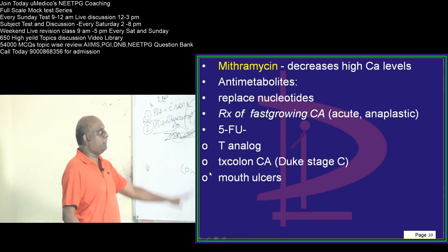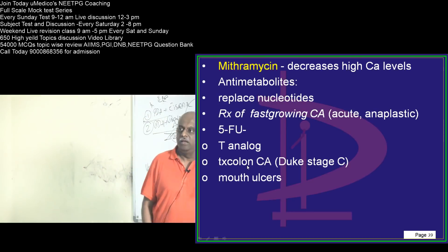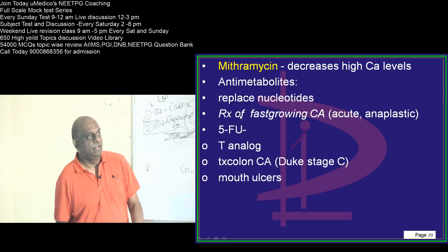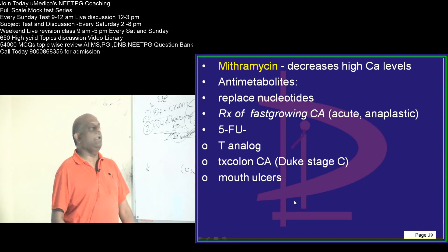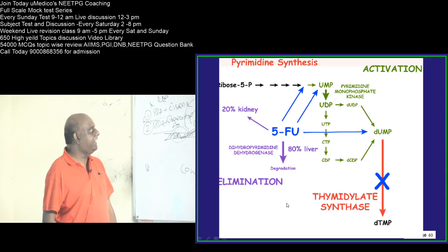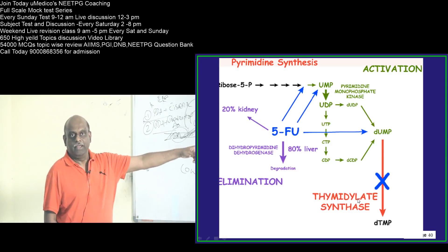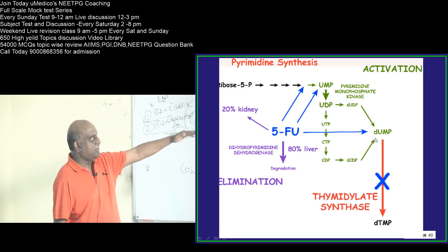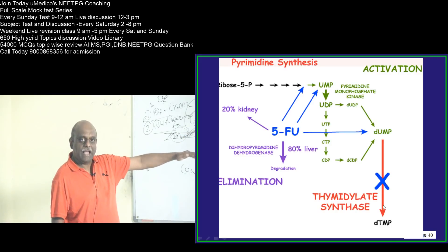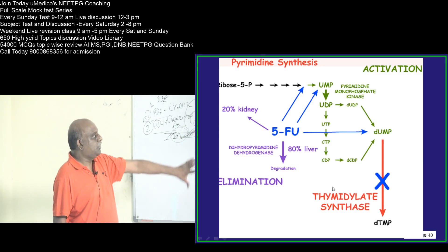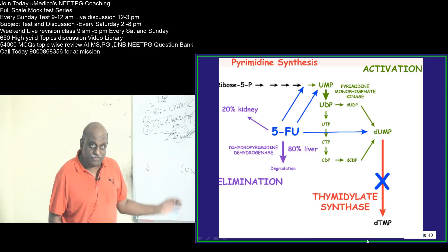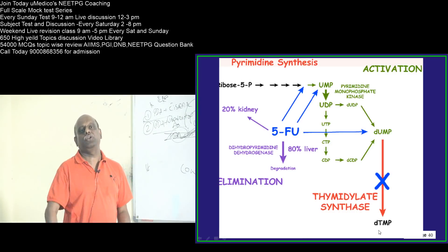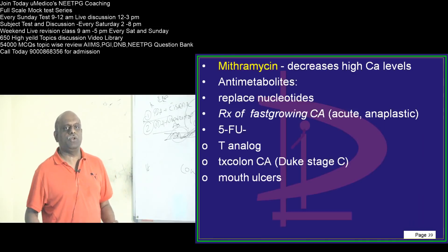Now, 5-fluorouracil — it is an analogue of thymine. That is the reason it inhibits thymidylate synthase, leading to blocking of the conversion of uridine monophosphate into thymidine monophosphate. So inhibition of thymidylate synthase is the key bullet about 5-fluorouracil that you have to remember for tomorrow's exam.